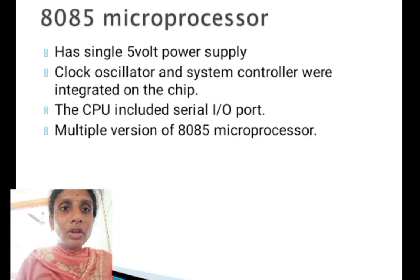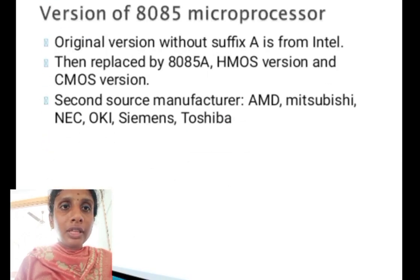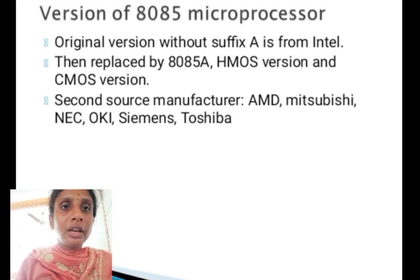The CPU includes a serial input/output port. There are multiple versions of the 8085 microprocessor. The original version without a suffix was from Intel, then replaced by the 8085A, an HMOS version and a CMOS version.